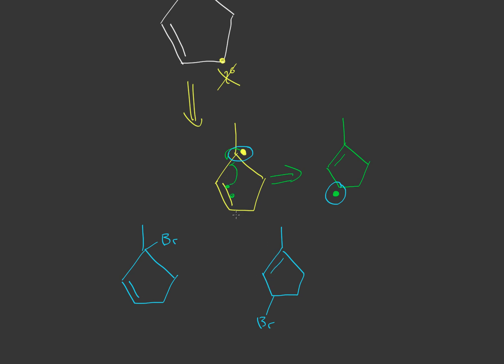So because this is allylic, it's resonance stabilized, you can actually form two different spots where you can get carbocations. Which of these is more stable? Well, since this is a tertiary carbon right here, it's more stable than a secondary that's over there. So this is actually more major than this one. They're both major products, but this is more shown within the products.